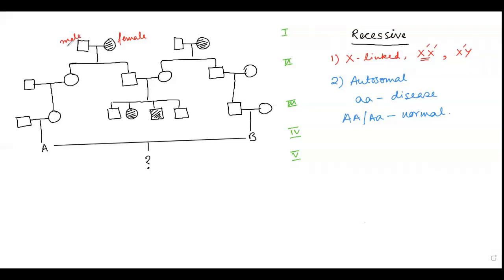In the first and second generation offspring shown here, the female is a carrier and the male should be affected if the trait were X-linked. However, according to this question, this male is absolutely normal. So X-linked recessive is definitely not applicable to this pedigree, and we can rule it out.